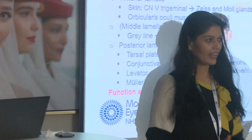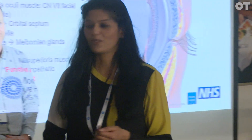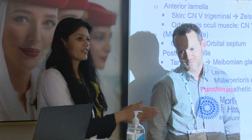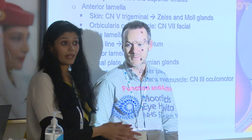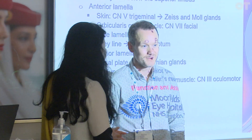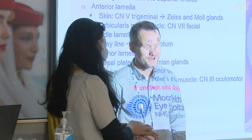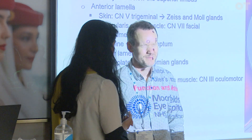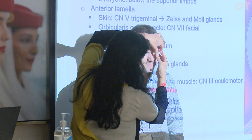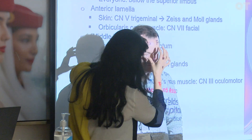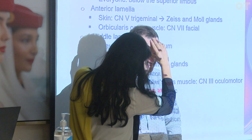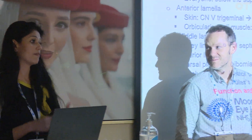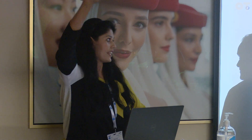To check the strength of the orbicularis oculi, remember it has a voluntary and an involuntary part. For the involuntary part, I observe the patient's blink rate and completeness. For the voluntary part I say 'close your eyes' and 'open.' To test power, I ask them to close as tight as possible and I try to open the eyes while they resist. Then I ask them to gently open — and you should see the eyeball roll down. That's the Bell's reflex: when you close the eyes, the eyeball goes up as a protective measure.